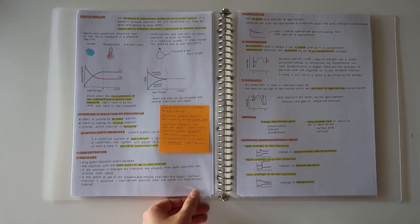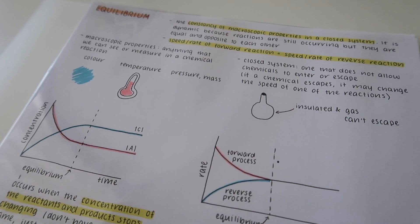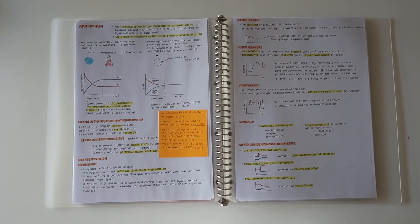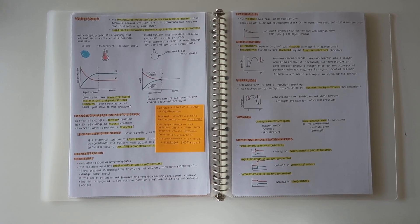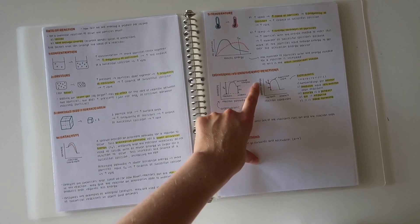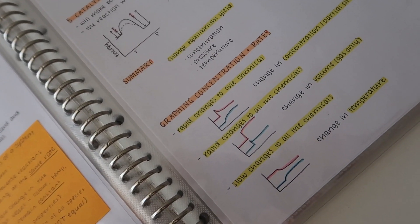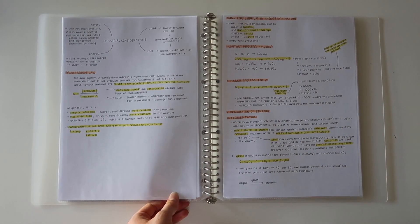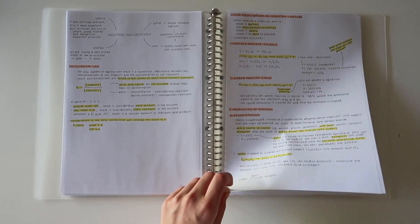Continuing through my rates and equilibrium notes, you can see some graphs I drew to illustrate the concepts, with another sticky note added. It's really important to have these graphs in my notes because I might have to recreate them in an exam — and I did have to recreate one. Sometimes they ask for various types, so it's important to know how to label the axes and draw each graph correctly. Including them in your notes is a sure way of remembering that.